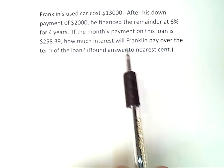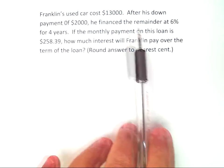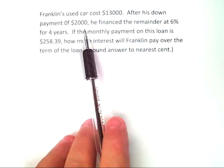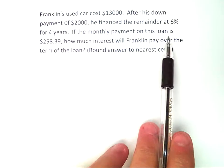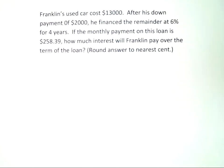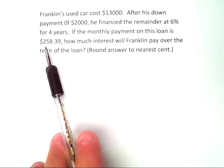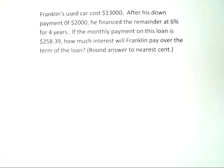Franklin's used car cost $13,000. After his down payment of $2,000, he financed the remainder at 6% for four years. If the monthly payment on the loan is $258.39, how much interest will Franklin pay over the term of the loan? They want us to round that answer off to the nearest cent.